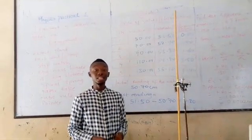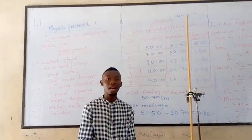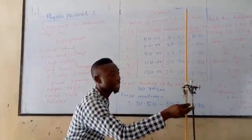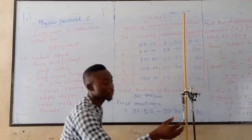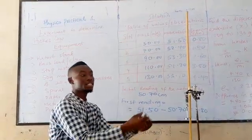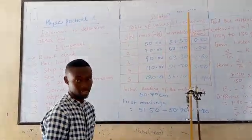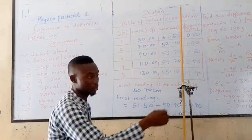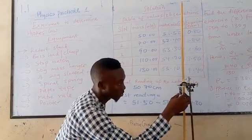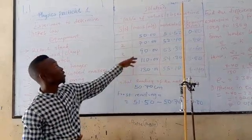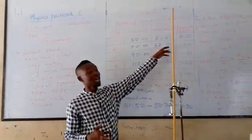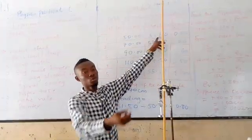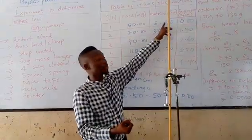Then, on attaching a mass hanger of 50 grams, let's see how the extension will take place. So I introduce a mass hanger of 50 grams to the spiral spring. And you will find out that the spring extends to some certain length. So I am going to record the value for the pointer on the meter rule. So, checking it, we will see that the second value, that is where the mass hanger is attached, will have the meter rule, the extension will move to 51.15.